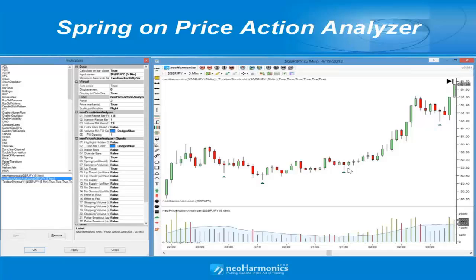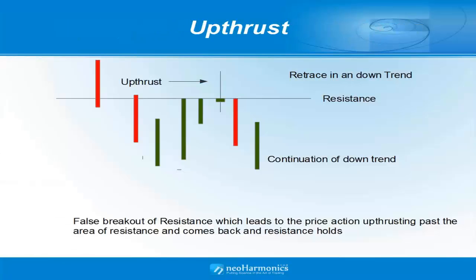Springs are only to be used in an uptrend. The next item we're going to cover is the up thrust, which is the opposite of a spring. An up thrust is basically an inverse of a spring. In this case we assume we are in a downtrend. As price comes up to an established resistance area, we have a false breakout of that resistance, marked by a tail, which leads to price being up thrusted past the resistance area and then coming back to hold that resistance with a continuation of the trend down.